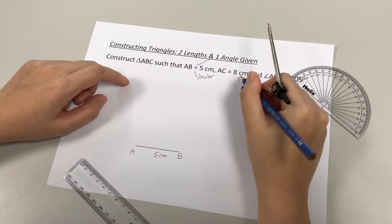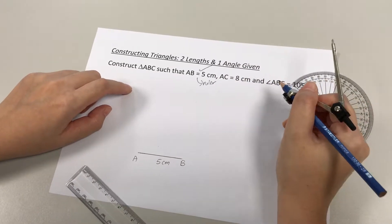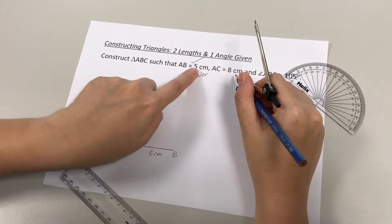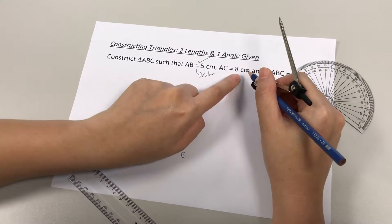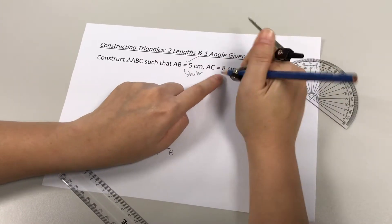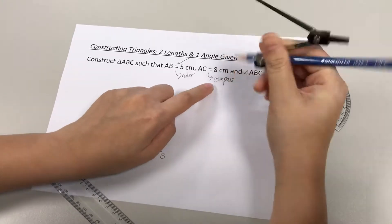Now let's look at the next information given. We need to draw AC 8cm. To do this, this is a length that is given. Other than the first length that you use a ruler, all other lengths given must be drawn using your compass. It's important to note that this second length must be drawn using the compass.